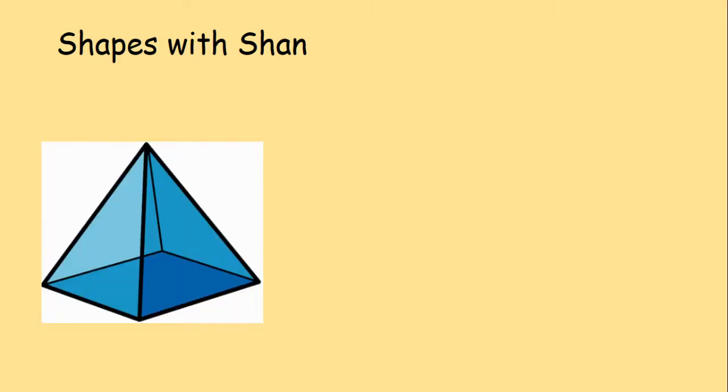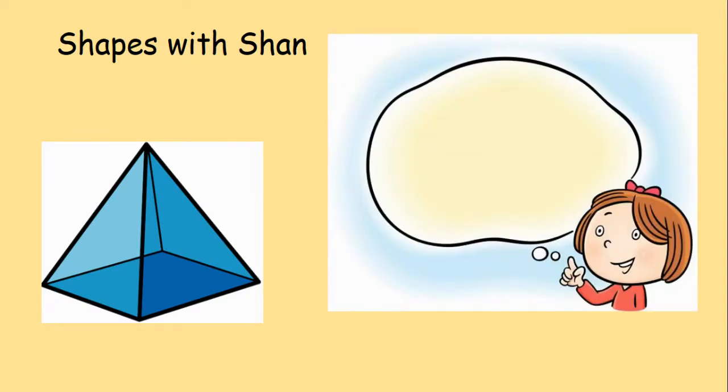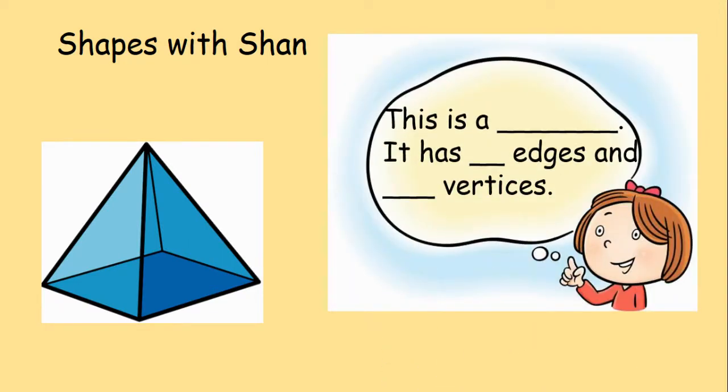We're on to shapes with Shan now. This is our 3D shape. You need to fill in the blanks. This is a something. It has something edges and something vertices. Remember, an edge is the place where two faces meet and a vertex is the corner of the shape. How many edges and how many vertices does the shape have and what is this shape? Press pause now to work out your answers and then press play once you are ready.